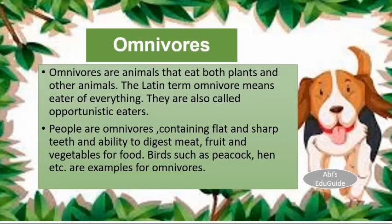Omnivores. Omnivores are animals that eat both plants and other animals. The Latin term omnivore means eaters of everything. They are also called opportunistic eaters. People are omnivores, containing flat and sharp teeth and the ability to digest meat, fruit, and vegetables for food. Birds such as peacock, hen, etc. are examples of omnivores.